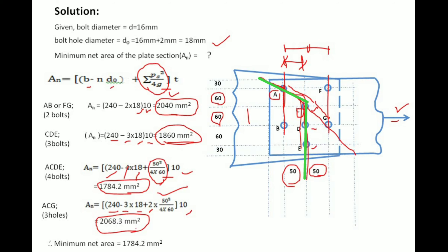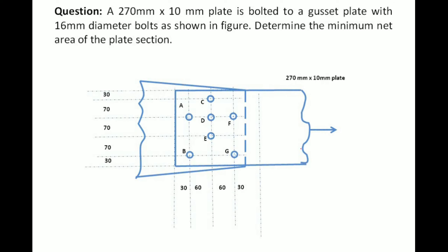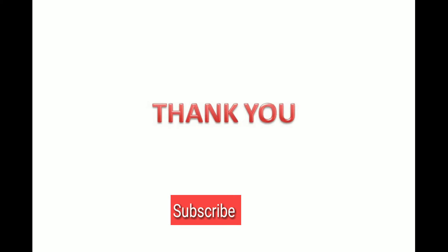That is how you calculate the minimum net area for staggered connections. For practice, I am giving you a question — it is a staggered connection. Please try to solve it and comment your answer. Thank you for watching. If you liked the video, please hit the like button and subscribe to my channel for new videos on topics in steel engineering.